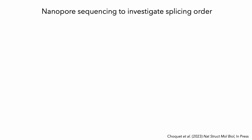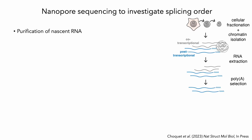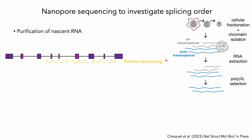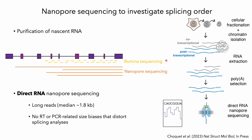To measure splicing order across multiple introns, we started with purifying nascent chromatin-associated RNA, and I'll focus specifically on post-transcriptional splicing. Once we have nascent RNA, we want to analyze it through sequencing. But one of the reasons why it's been so challenging to study splicing order until recently is that the reads from Illumina sequencing are typically shorter than the introns themselves. What's been a real game-changer is the development of direct RNA nanopore sequencing, which yields long reads that span multiple introns.